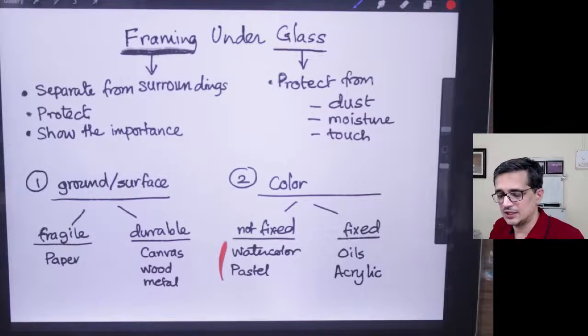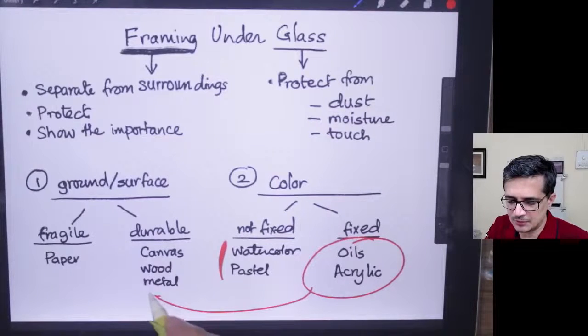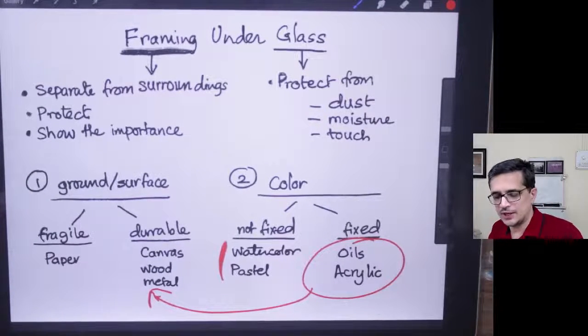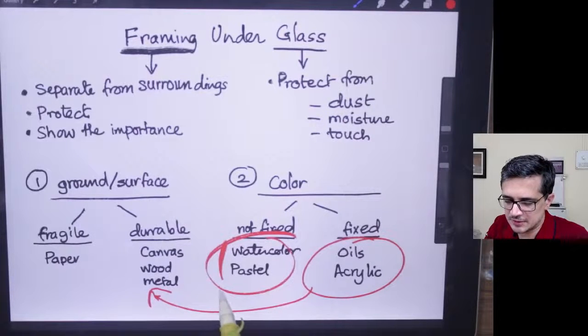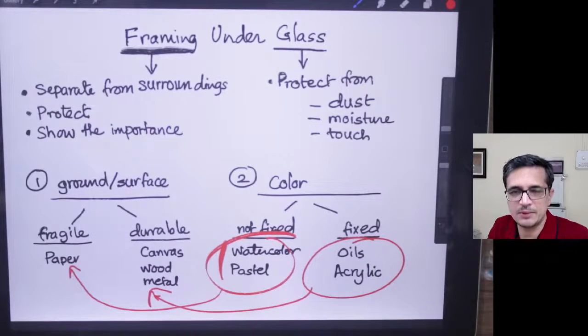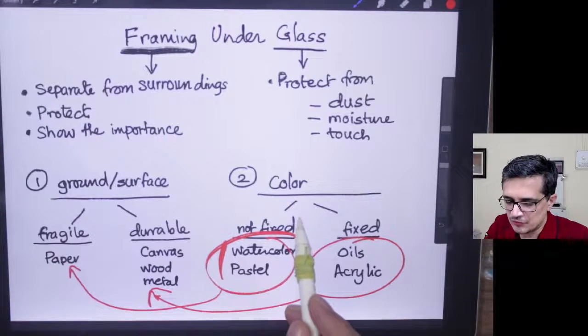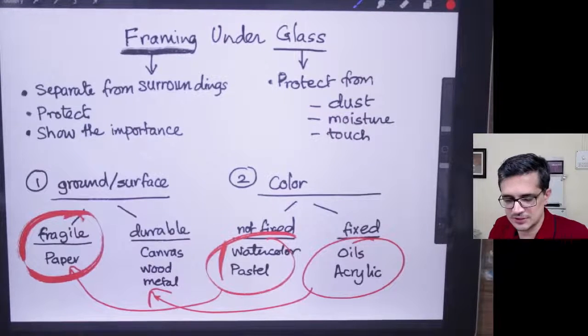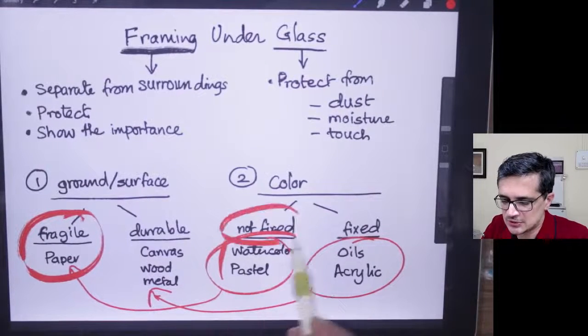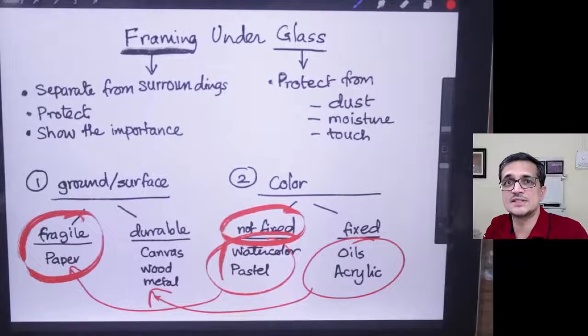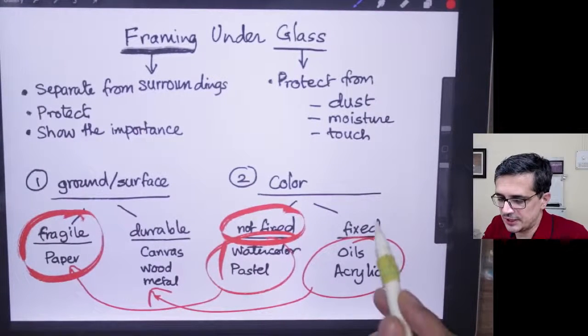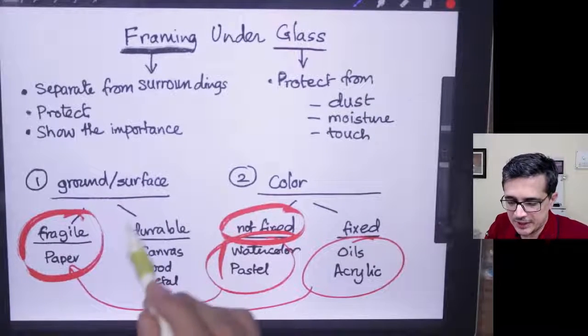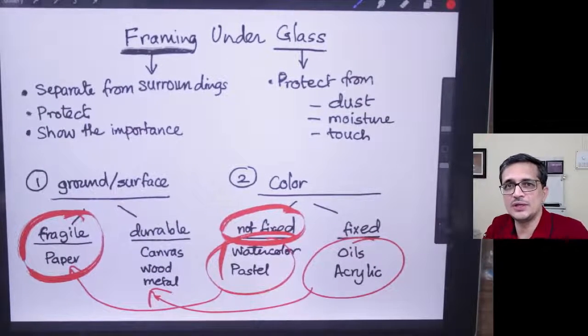Generally, oil and acrylic paintings are painted on more durable materials like canvas, wood, and metal, whereas watercolor and pastel medium is mostly used on paper. In which case, first thing is the material itself is fragile, and the color is also not fixed, so it needs the protection of glass. Whereas when you paint oils and acrylics, which are fixed mediums painted on durable material, that's why you don't need the glass.